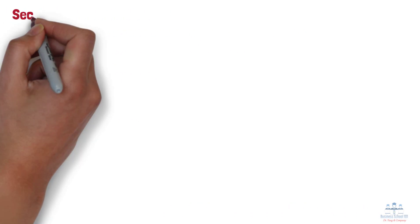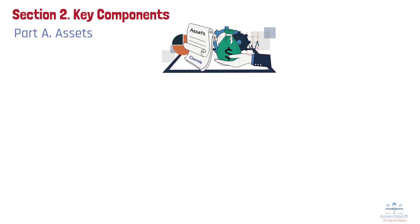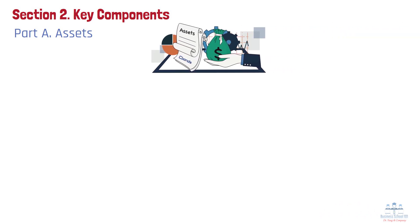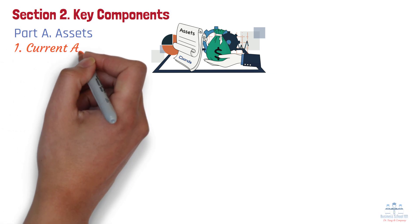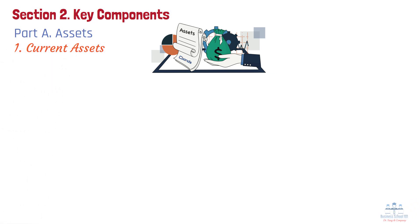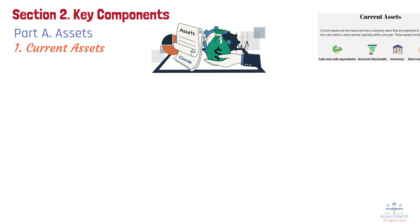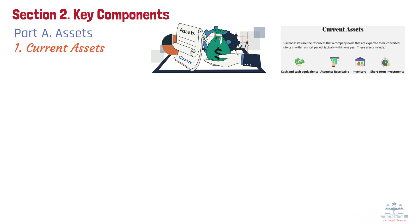Section 2: Key Components. Let's go through each of those three parts in detail. Part A: Assets. Assets represent everything a company owns that has economic value. These resources help businesses generate revenue and sustain operations. Assets are classified into two main types. Type 1: Current assets. Current assets are highly liquid, meaning they can be converted into cash within one year. These assets are crucial for day-to-day business operations.